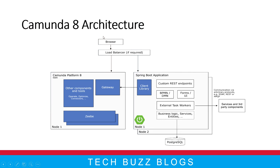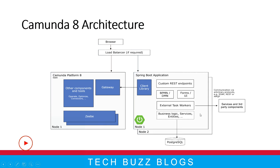Looking at how Camunda 8 works: at the top you have the browser, which could be your own Angular application. Then you have your Spring Boot application, and separately you have the Camunda Platform 8 — shown here as SaaS. This is the Camunda cloud, which has both paid and free versions. In the SaaS Camunda 8 platform, they provide gateways, Operate, Optimize, connectors, Task List, and related components. They also provide the ZB client library, which interacts with your Spring Boot application.